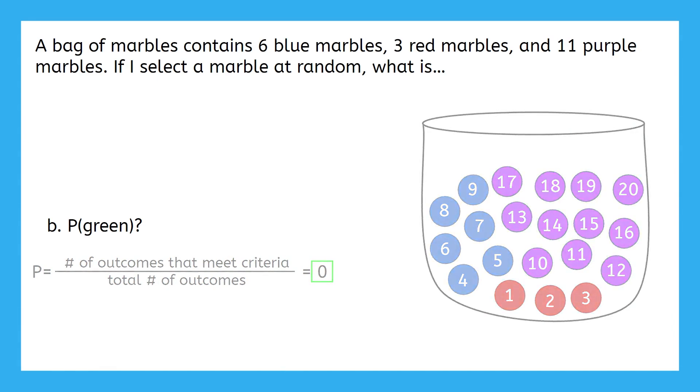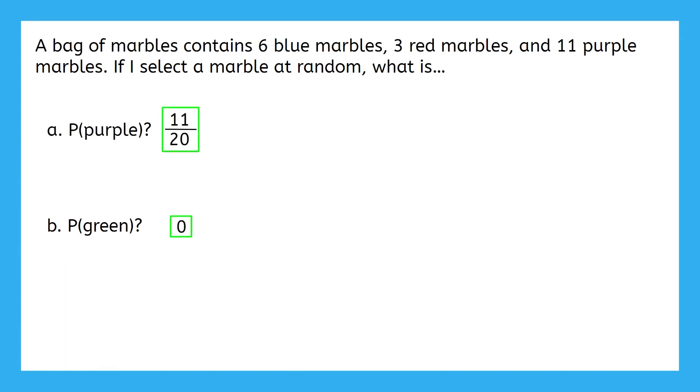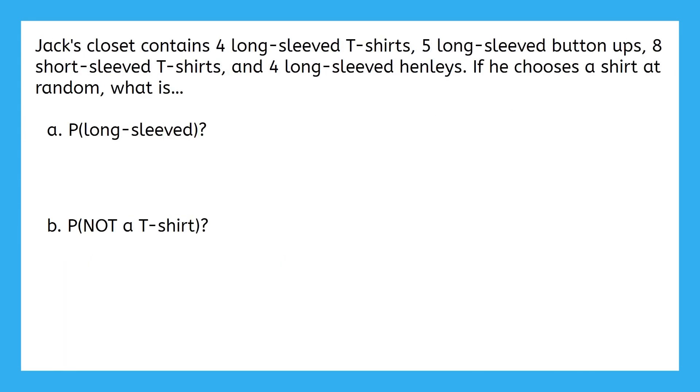Let's try one more example problem together. This problem says, Jack's closet contains four long-sleeved t-shirts, five long-sleeved button-ups, eight short-sleeved t-shirts, and four long-sleeved Henleys. If he chooses a shirt at random, what is A the probability that it is a long-sleeved, and B the probability that it is not a t-shirt?